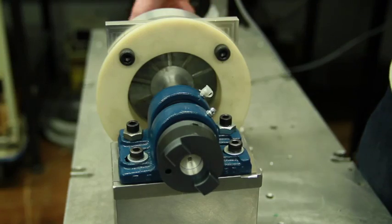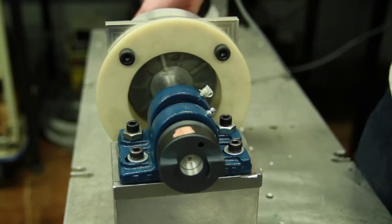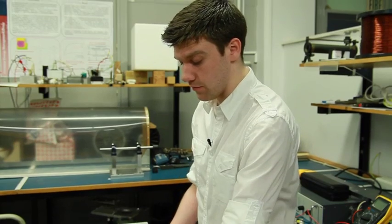As you can see here, the outer rotor is moving in one direction, while the high-speed rotor is moving in the opposite direction.